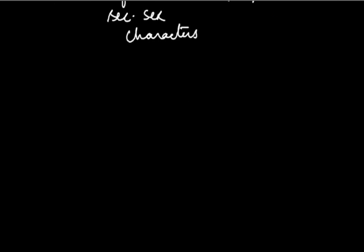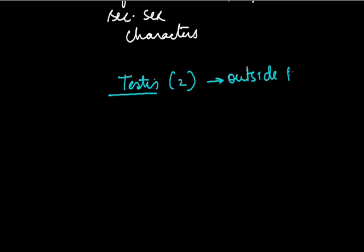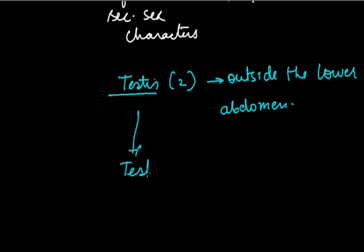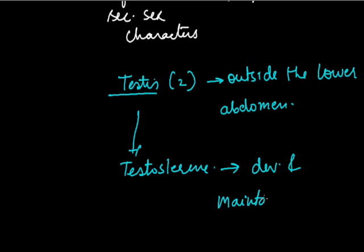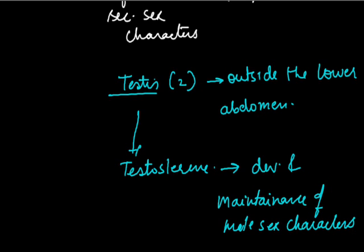The testes, present only in males, is also called the male genital organ. They are two in number and situated outside the lower abdomen. Testes secrete only one hormone: testosterone. It is mainly concerned with the development and maintenance of male sex characters and enhancing the process of spermatogenesis.